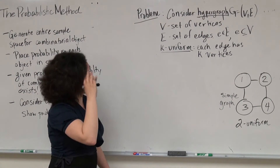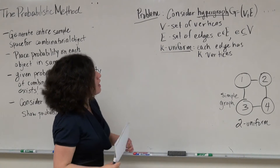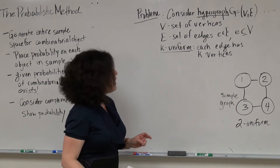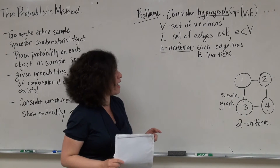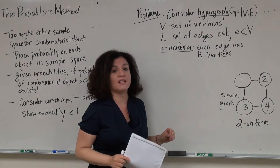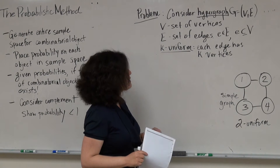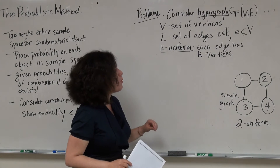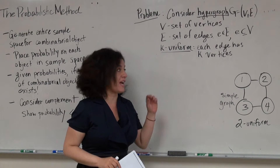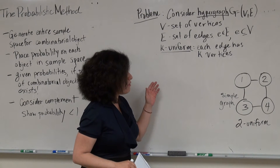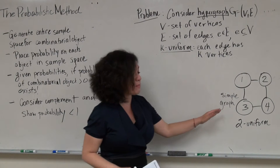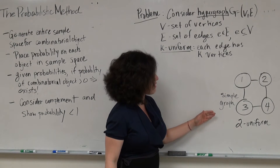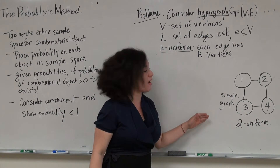Now we're going to get to hypergraphs. A hypergraph is a graph — it has a set of vertices V and a set of edges, where the edges are subsets of the vertices. We say that a hypergraph is k-uniform when each edge has exactly k vertices. I've shown a simple graph, which is the graph we often see in discrete mathematics and graph theory.